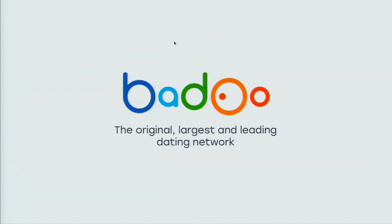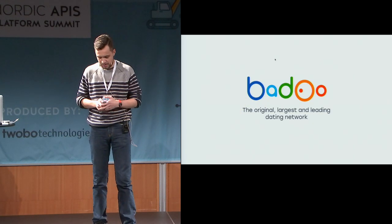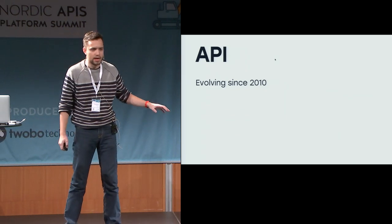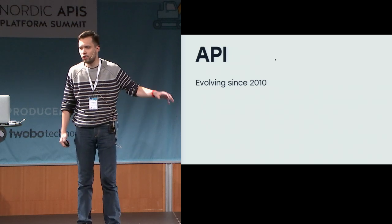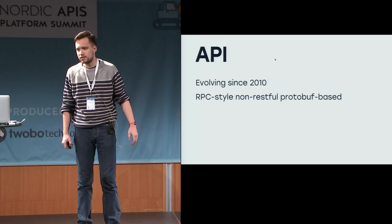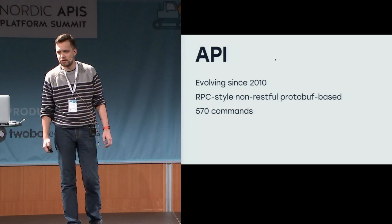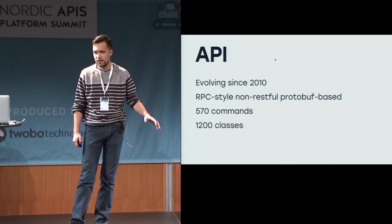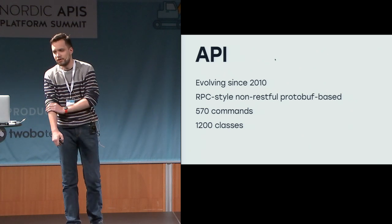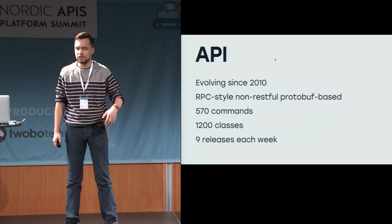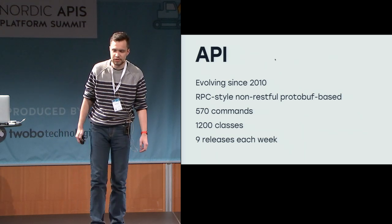Badoo — you may or may not have heard of us depending on which country you're from. It is the largest dating network on earth. It has an API, and not only does it have an API, it has had an API since 2010, and it's never had a huge breaking change. It's an evolving thing. It's not RESTful — it's actually RPC-style and protobuf-based for our mobile clients, JSON-based for web clients. Currently we have almost 600 different commands and over a thousand classes. We do a release every working day in the morning and in the evening — except Friday evening, we don't do a release because we drink instead.